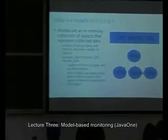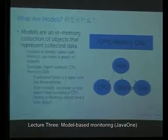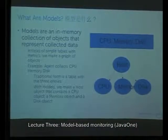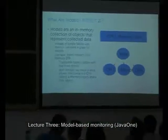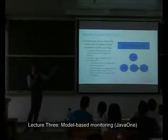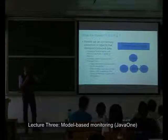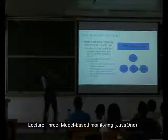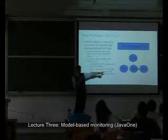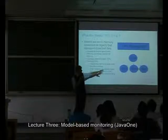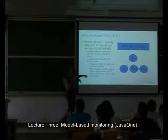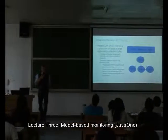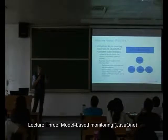The model must reflect the structure of the application — those tier pictures with different kinds of nodes. We create objects in memory that represent that structure, and we have patents on this approach. Models are basically objects — an in-memory collection of objects that represent what we've collected. For example, you may collect CPU utilization, available memory, and available disk space. Instead of putting them in a table, we make a graph of objects: a host object with CPU, memory, and disk objects as children, attaching the CPU utilization metric to the CPU object. Even though this takes more space and memory, it has a whole set of benefits.